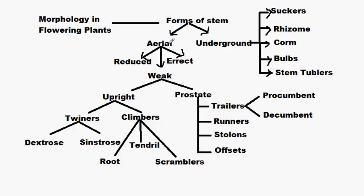In the aerial stem, weak aerial stem can be classified into two types: the upright weak aerial stem and the prostrate weak aerial stem. The upright can be classified further into two types: twiners and climbers. The prostrate weak aerial stem can be classified into four types: trailers, runners, stolons, and offsets.